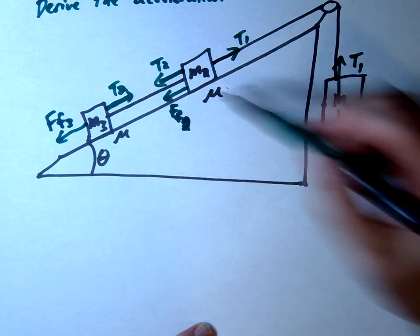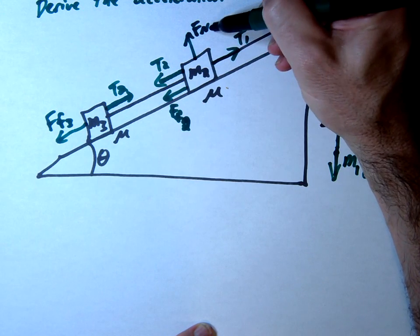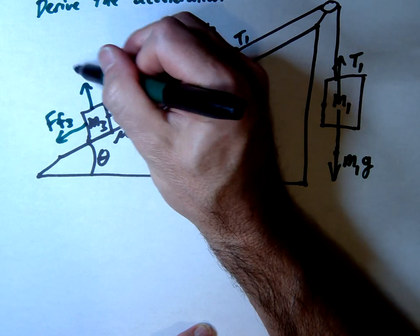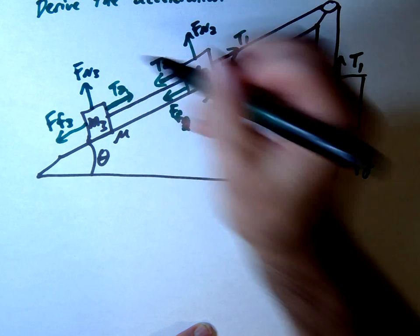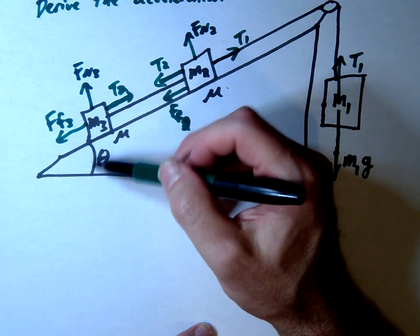Okay these also have some normal forces so there's an FN2 here, there's an FN3 here. We also have gravity coming down, gravity coming down.